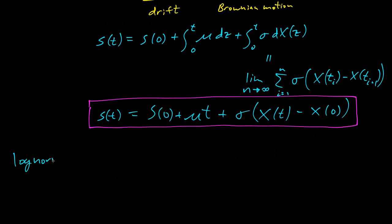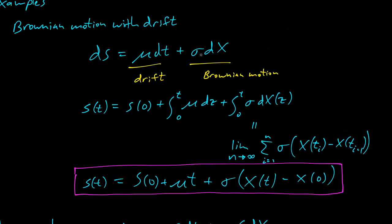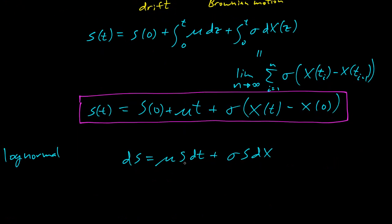Let's do the second example: log normal. We've seen this equation before. ds equals μs dt plus σs dx. This is very similar to the one above. μ dt, σ dx, we're just adding a factor of s to make it proportional to itself. This will turn out to give us log normal behavior.